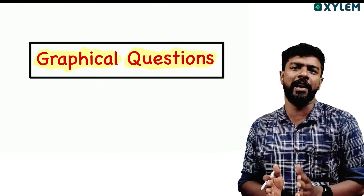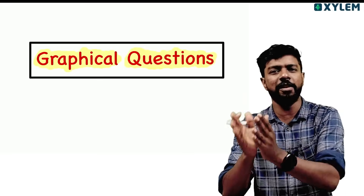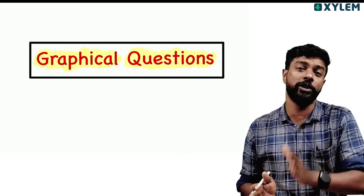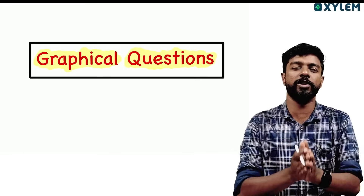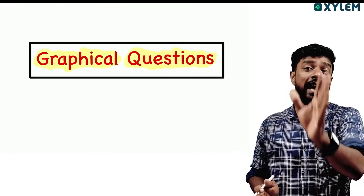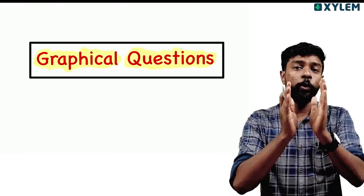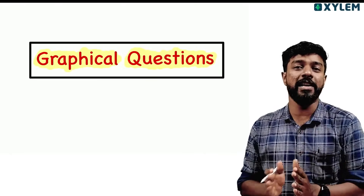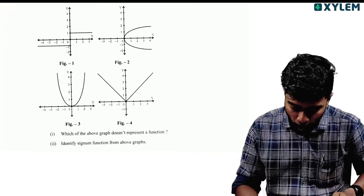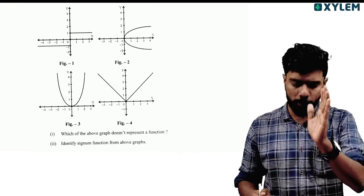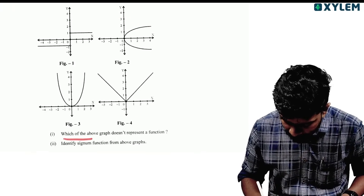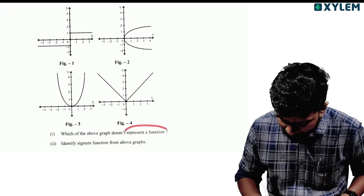That's what we have to do. In this graph, we will take the next step. In this graph, we will take the next month of four more in the graph. It's a good one. This is the fifth graph. What are we going to do? Which of the above graphs does not represent a function?